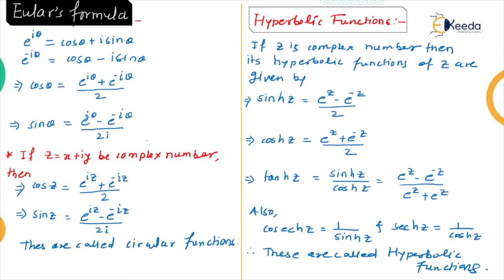Euler's formula states that e to the power iθ equals cos θ plus i sin θ. Also, if we replace iθ by −iθ, then e to the power −iθ equals cos θ minus i sin θ. So cos θ equals (e^(iθ) + e^(−iθ)) / 2.